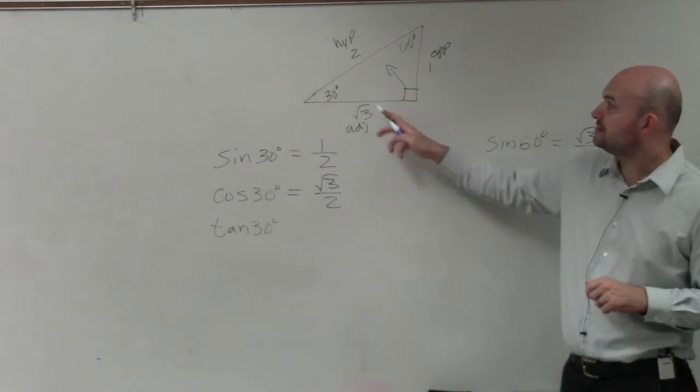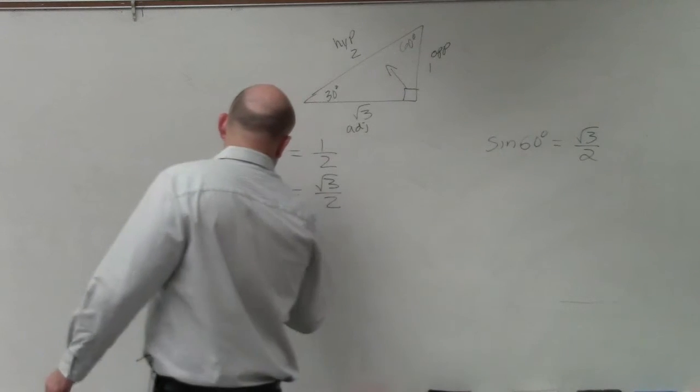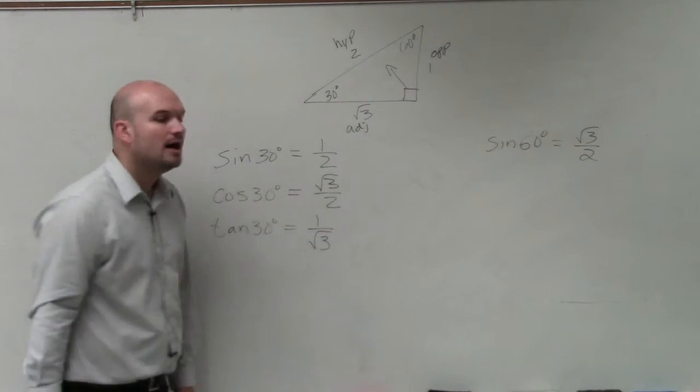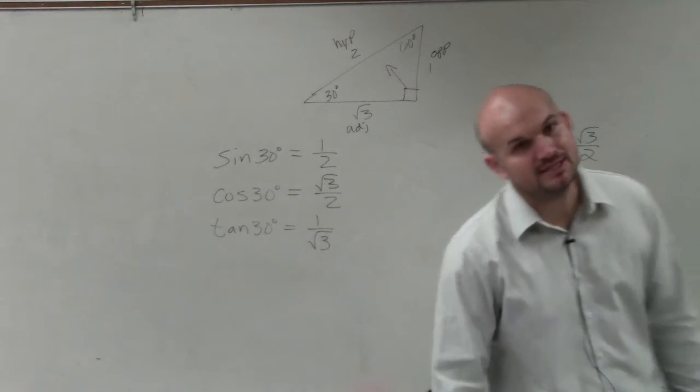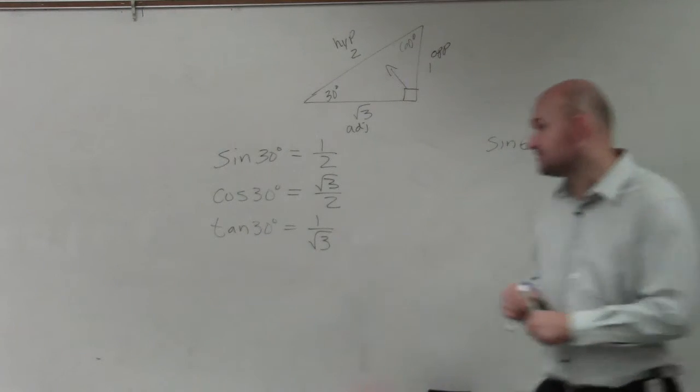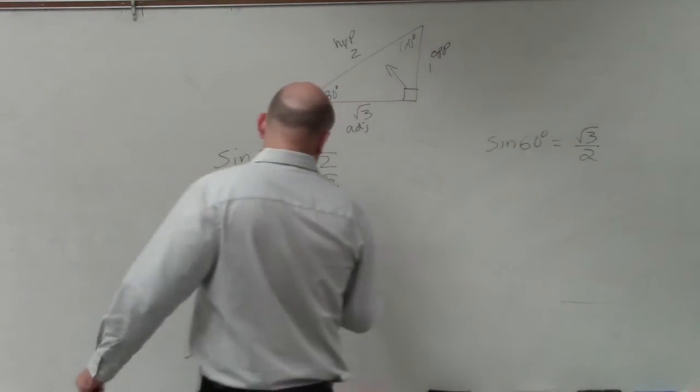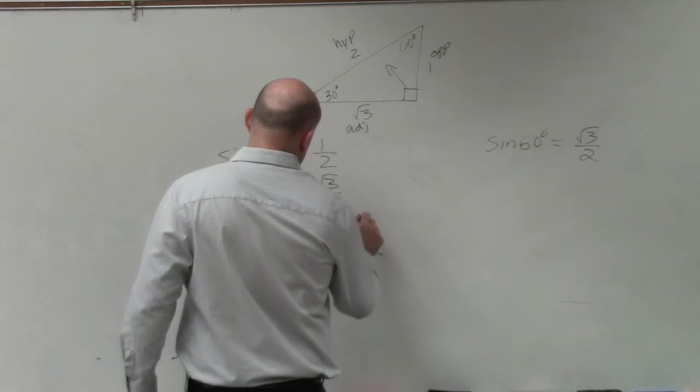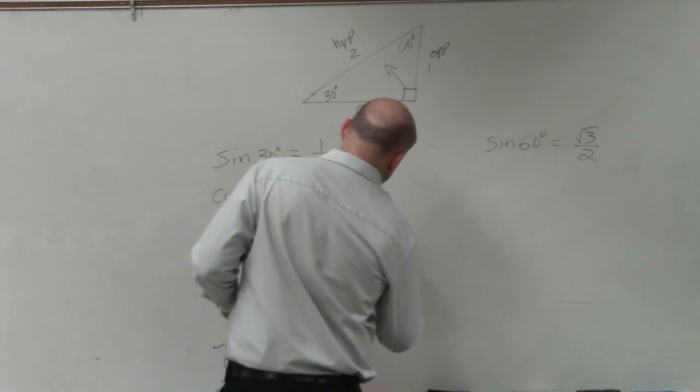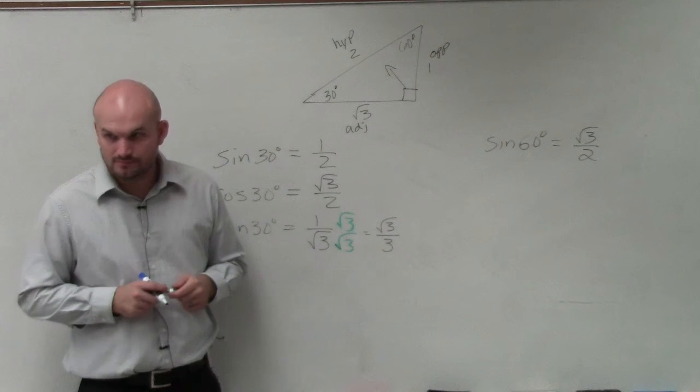Then the tangent of 30 degrees is opposite over adjacent, 1 over the square root of 3. However, ladies and gentlemen, please get very used to simplifying radical expressions. We are not going to have the square root of 3 in the denominator. So the tangent of 30 degrees is square root of 3 over 3.